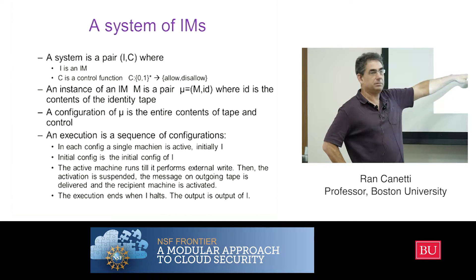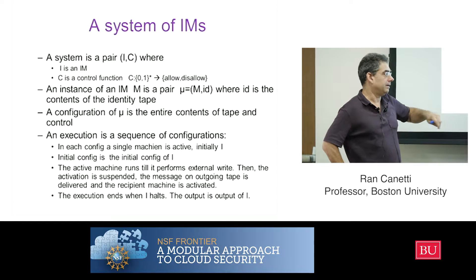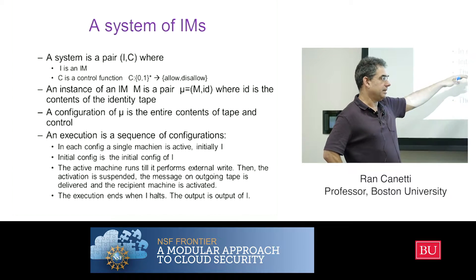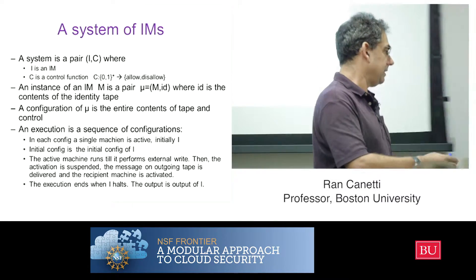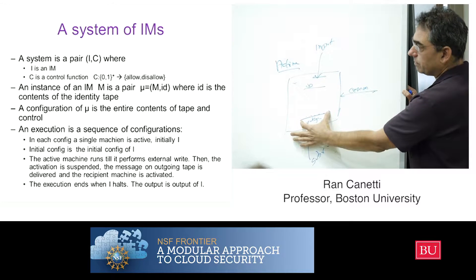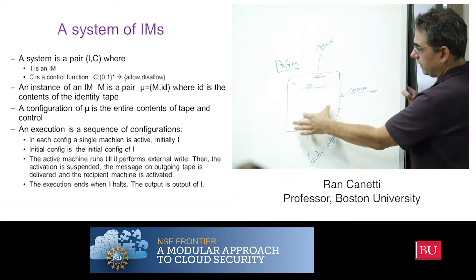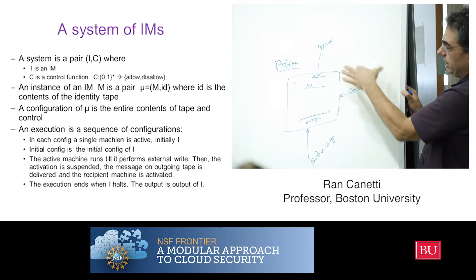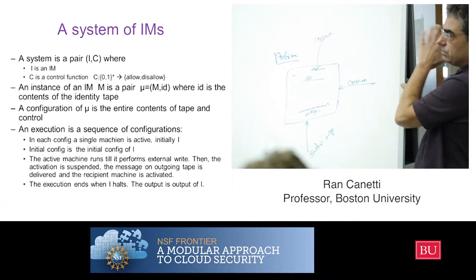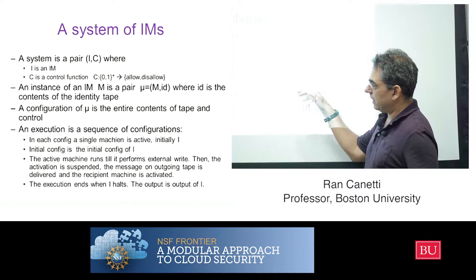The active machine runs until it performs some external write. At this point, the activation of that machine is suspended — it's no longer active, it gets some hold state. Then you take whatever information this machine wrote to its outgoing message tape, and you interpret it in some way. Hopefully this results in writing the content of this thing on one of the incoming tapes of another machine, and then that other machine starts running. And then you repeat — the other machine runs, et cetera. They just run one after the other in this way.